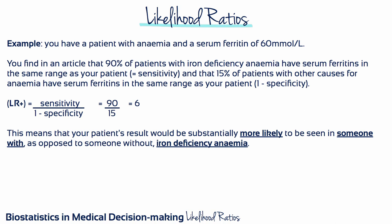For example, say you have a patient with anemia and a serum ferritin of 60 millimoles per litre. You find in an article that 90% of patients with iron deficiency anemia have serum ferritins in the same range as your patient — this is the sensitivity — and that 15% of patients with other causes for anemia have serum ferritins in the same range. If you calculate the positive likelihood ratio, you get a value of 6. This means that your patient's result would be substantially more likely to be seen in someone with, as opposed to someone without, iron deficiency anemia.